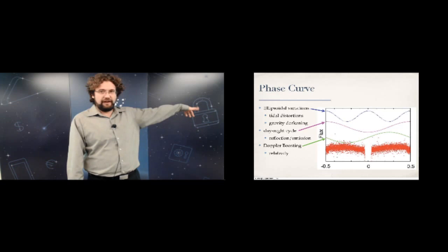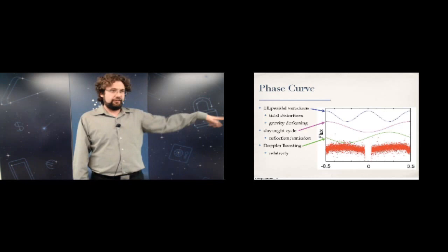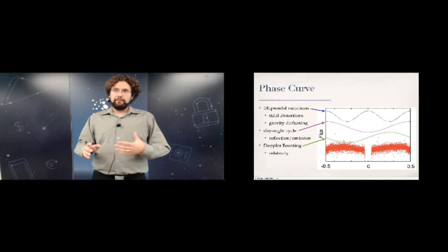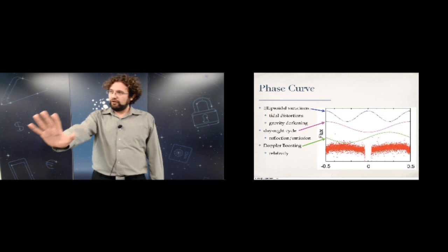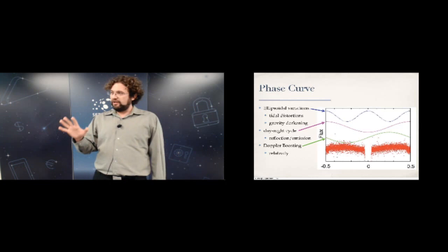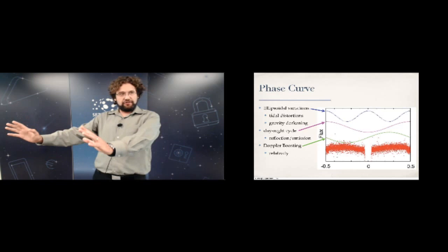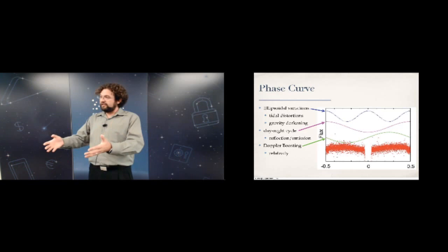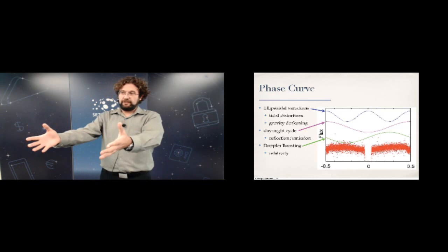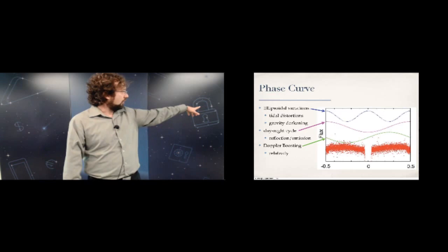The last effect — Doppler boosting — is a relativistic effect of the star moving around the center of mass. Similar to radial velocities, you see the star shift blue when moving toward you and red when moving away. With relativity, the photon arrival rate also changes: moving quickly toward you makes the star appear brighter; moving away decreases flux. The green curve mirrors what you'd see from a radial velocity standpoint.